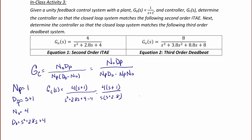Now let's try the third-order deadbeat. For the third-order deadbeat, the numerator and denominator of the plant is the same, but now the numerator of the closed-loop transfer function is 8. And the denominator of the closed-loop transfer function is s³ plus 2.8s² plus 8.8s plus 8.